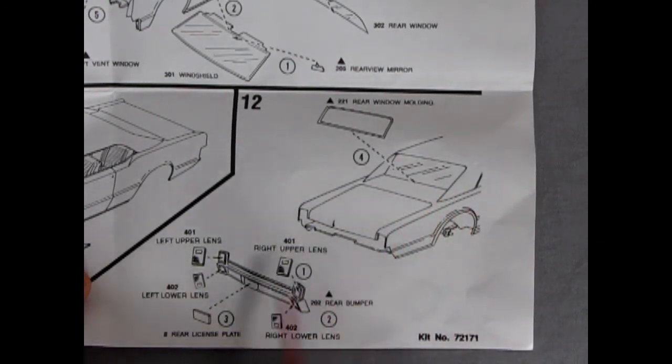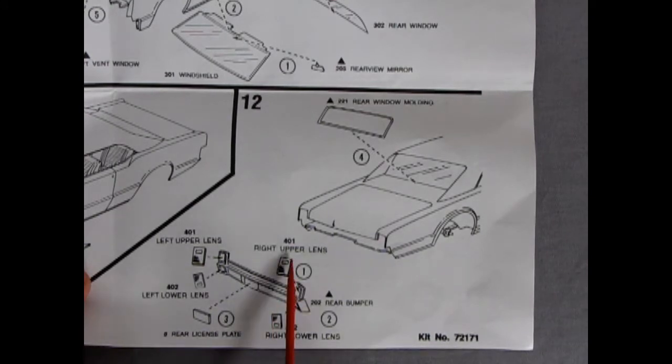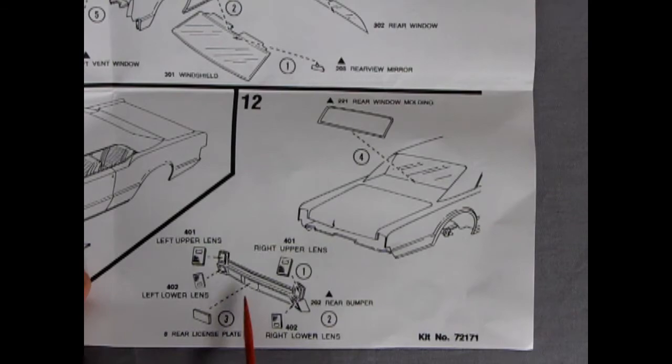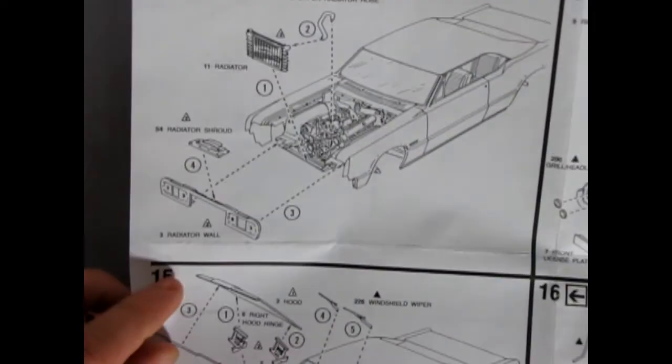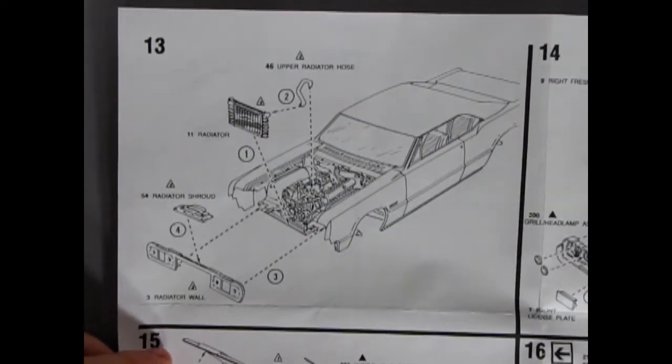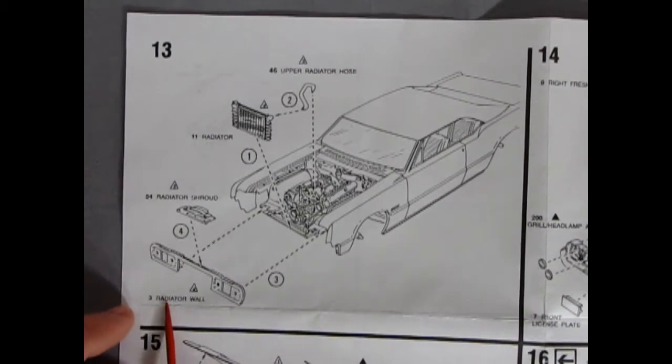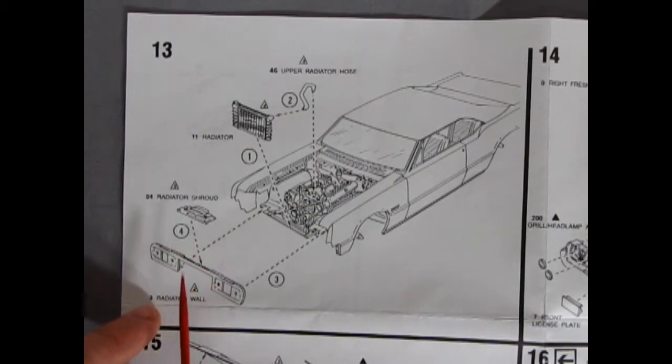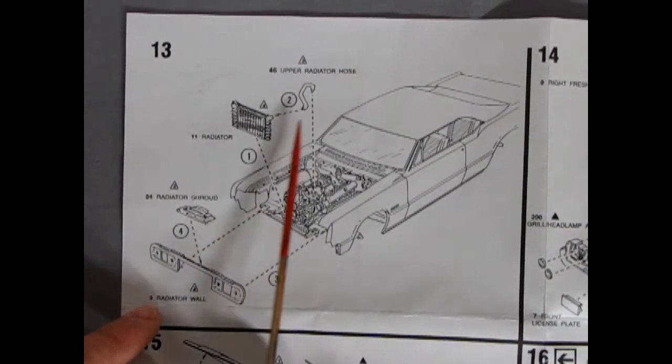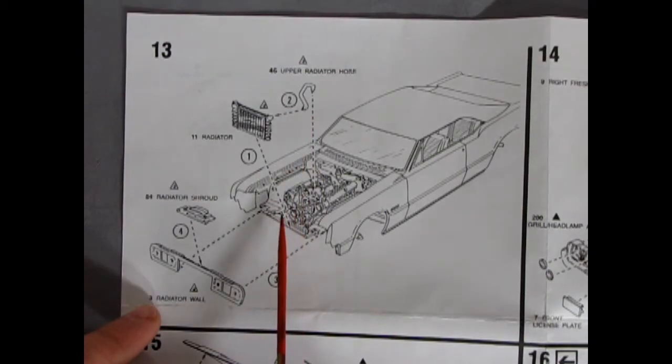Oh. You get rear window chrome molding trim that you pop into the back. Into that tunneled roof. And then, you've got your lower, upper and lower taillight lenses popping in, and a chrome license plate. Going in the back. Okay, turning this around here. Panel 13. We have our radiator wall going on there, with the radiator shroud on the top. The radiator, and the upper radiator hose.